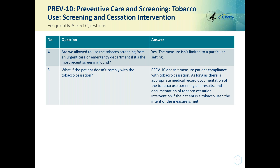Question four — are we allowed to use a tobacco screening from an urgent care or emergency department if it's the most recent screening found? Yes, this measure isn't limited to a particular setting. Question five — what if the patient doesn't comply with tobacco cessation? PREV-10 doesn't measure patient compliance with tobacco cessation; as long as there's appropriate medical record documentation of the tobacco use screening and its results, and documentation of tobacco cessation intervention if the patient is a tobacco user, the intent of the measure is met.